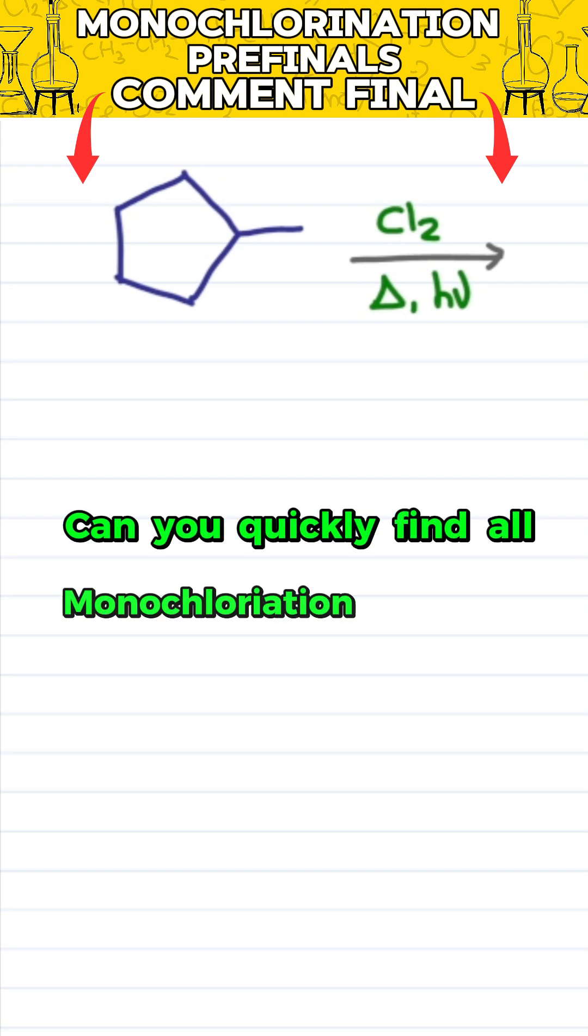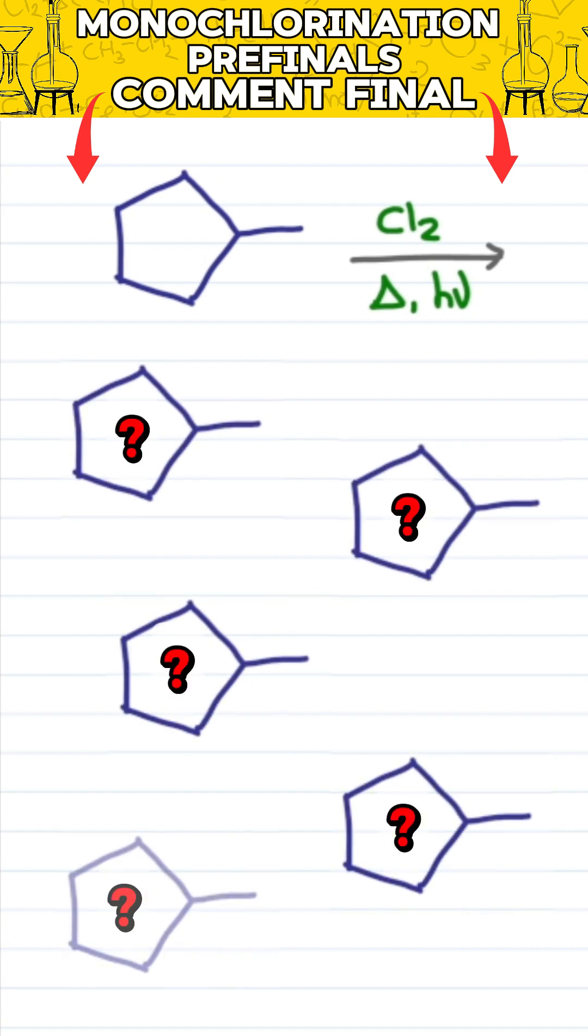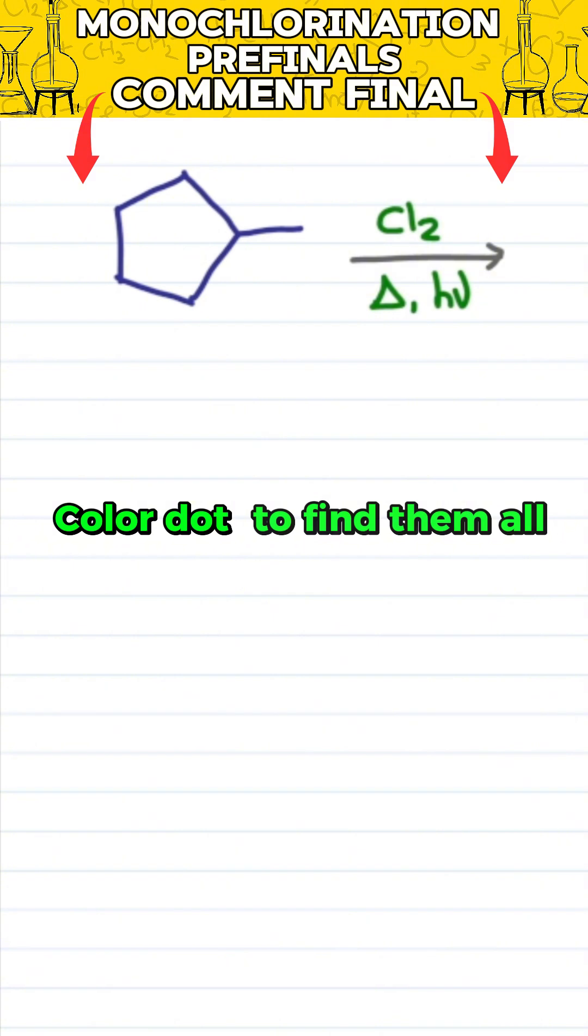Can you quickly find all monochlorination products including stereochemistry? Option one, draw them all out and guess, but we'll use my preferred method, a color dot to find them all, then we only draw what we know.